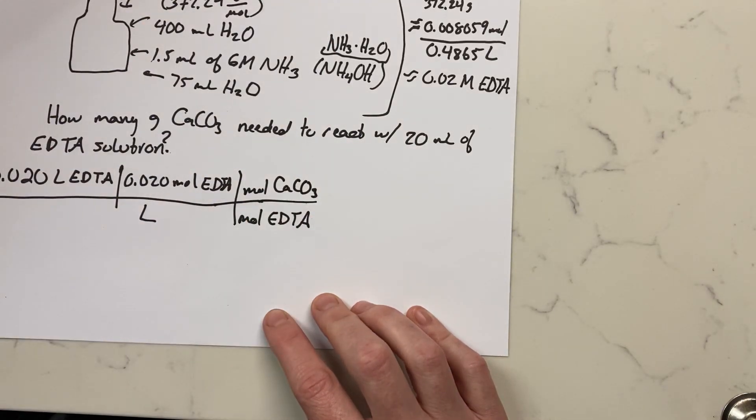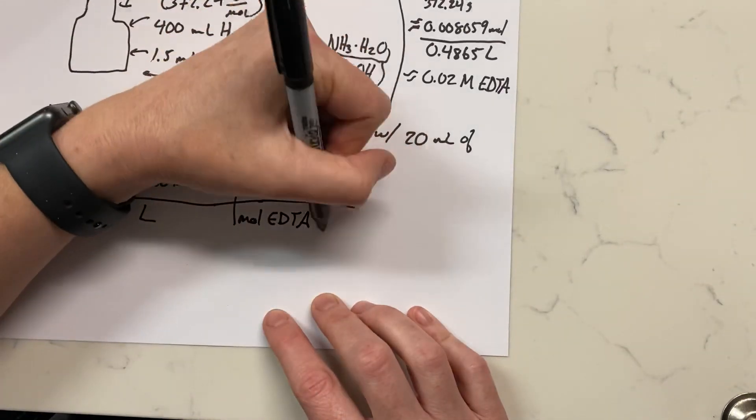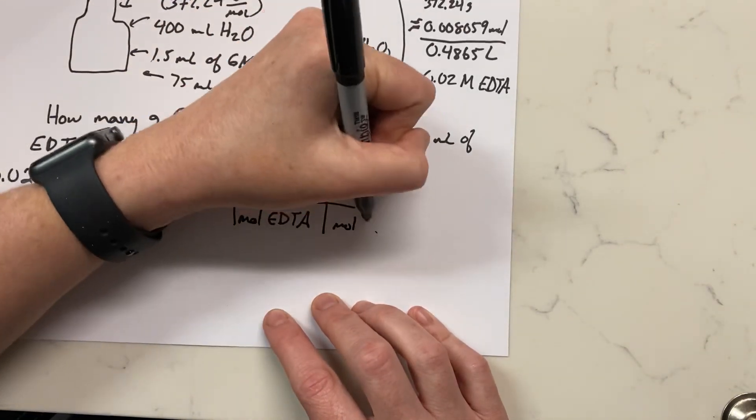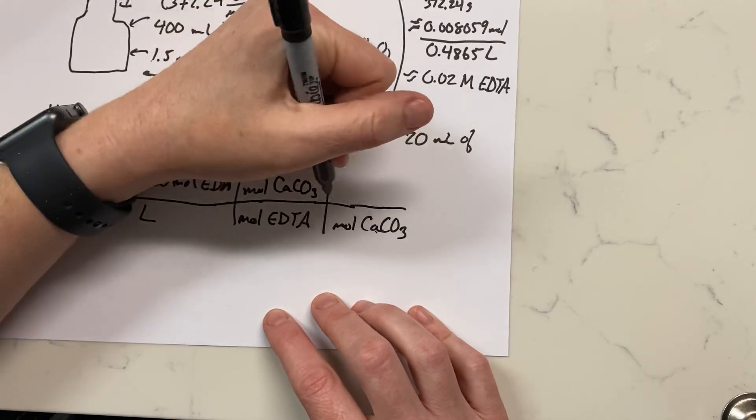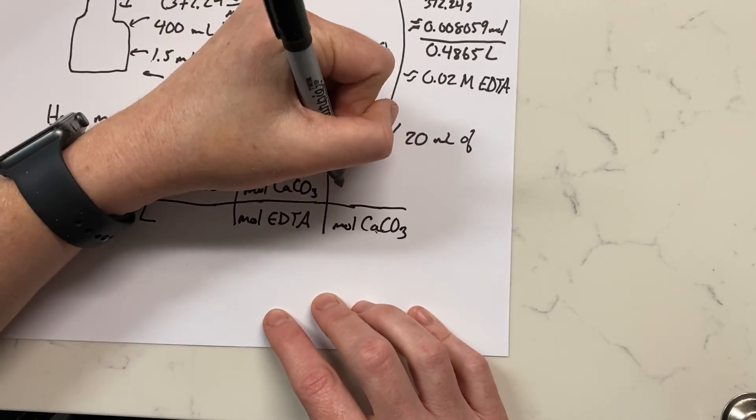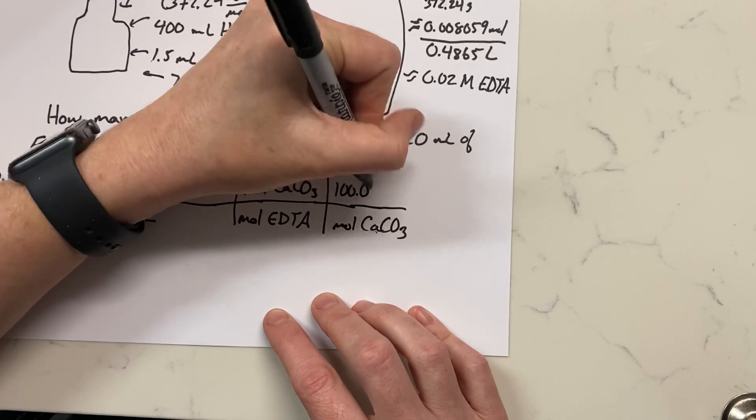We know that a mole of calcium carbonate, maybe we don't know this but we could look it up or calculate it, has a mass of about 100.09 grams.